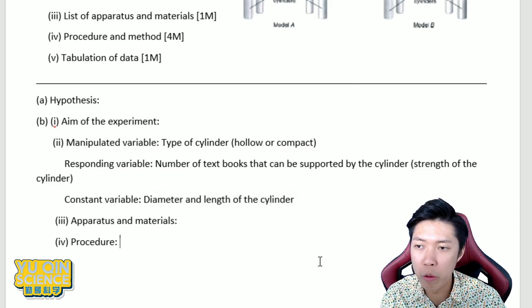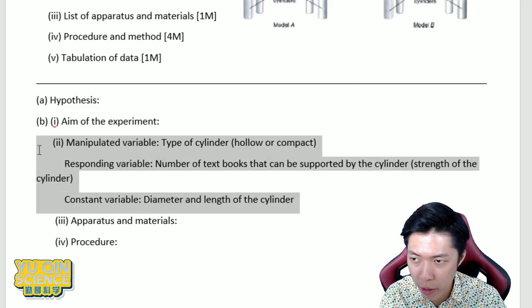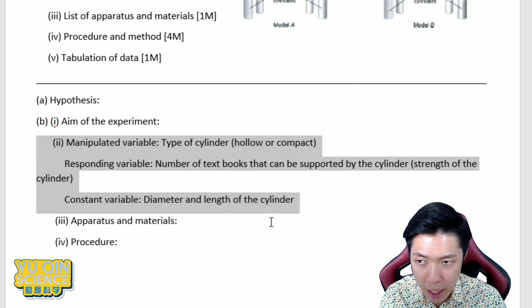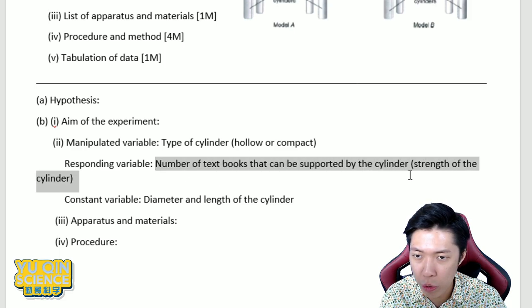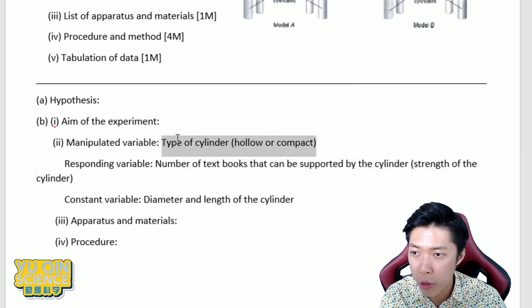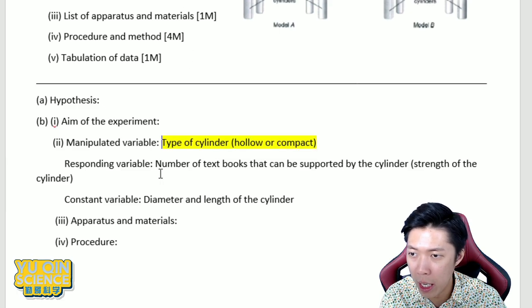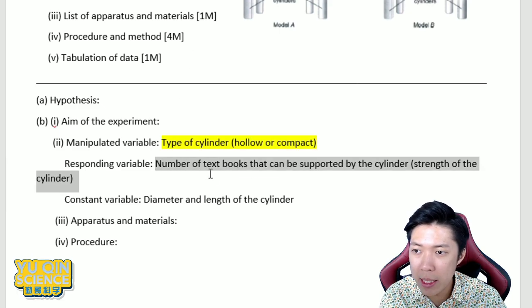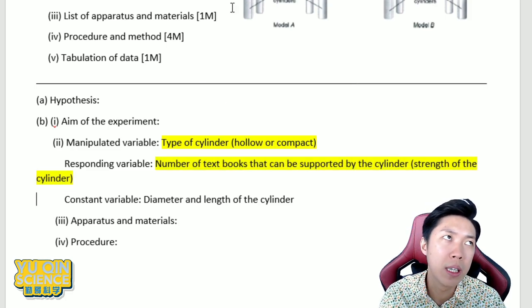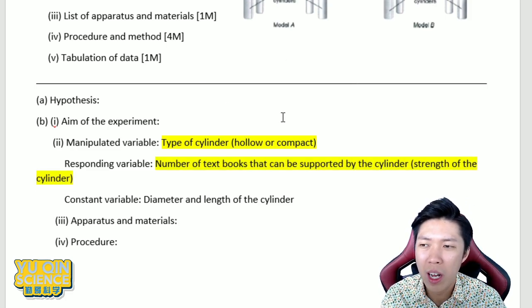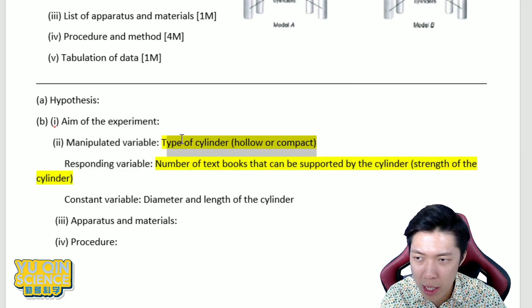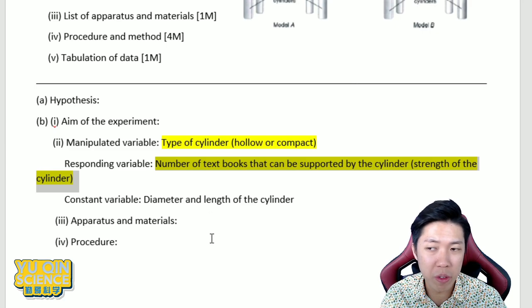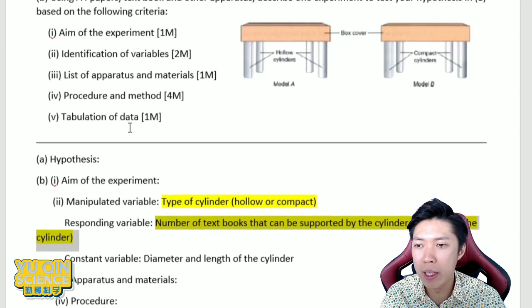So once I've gotten my manipulated variable, responding variable, constant variable done, it's time to get back to my hypothesis and aim. So I'm just going to quickly highlight to you my responding and manipulated because that's the soul of your experiment. Everything purely relies on these two already. So if you got these two answers correct, most probably you are safe for the rest of the question.